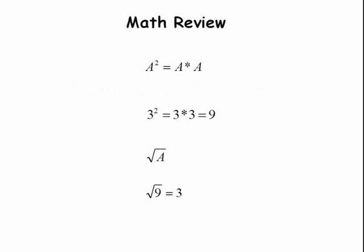We begin with a math review. A squared is a times a. For example, 3 squared equals 3 times 3, which equals 9. The inverse of that is the square root of a. If a is equal to 9, then the square root of 9 is 3.